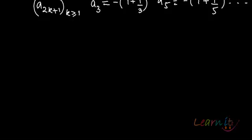Now, what do you think a_2k is converging to? So this is 0, this is 1, this is -1.